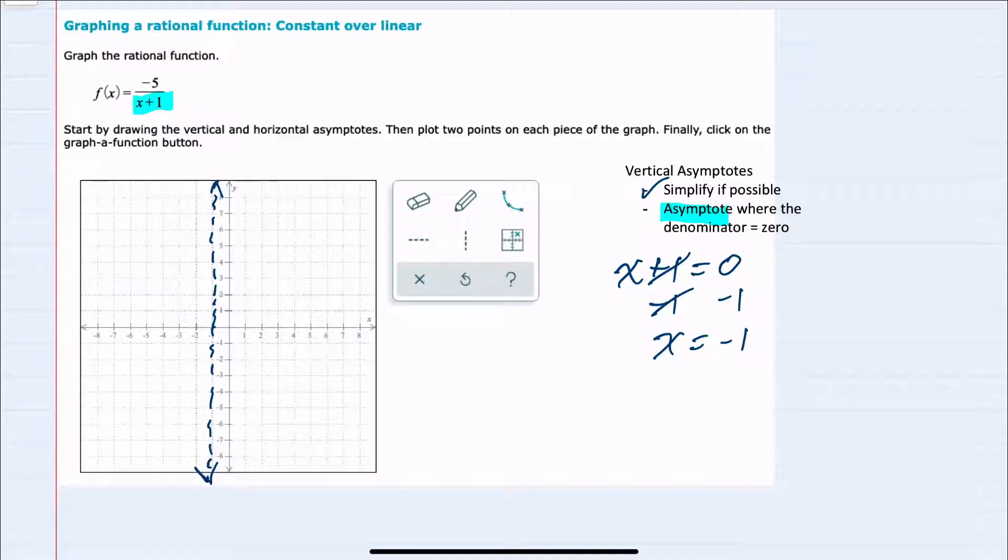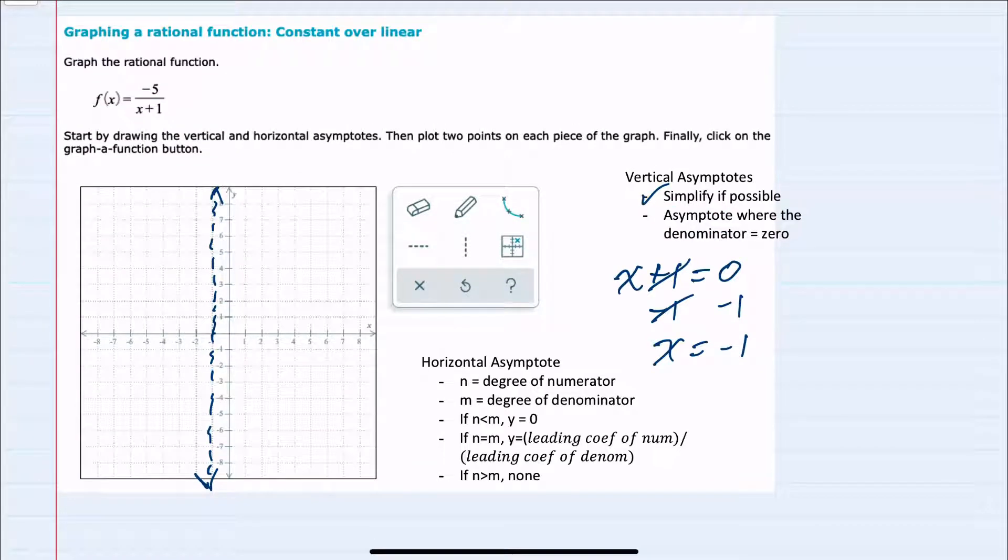We can then move to horizontal asymptotes. And for horizontal asymptotes, we recall that we first look at the degree of the numerator and the degree of the denominator. So n, the degree of the numerator. Since this is a constant, the numerator has a degree zero.